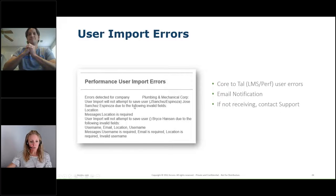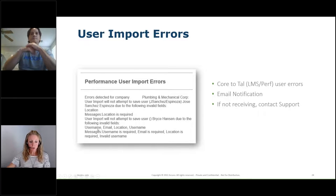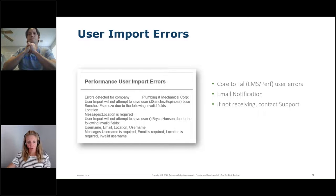If you are not currently receiving the error log email, make sure you let support or your account manager know. The email will tell you the user and why they errored. For example, if Jose didn't upload because of his location, that means the location field passed from CORE doesn't match a location field in the LMS and performance side — so you just need to create that matching location. Username can be tricky too: if a username is missing, that will throw an error. The email tells you exactly what field it's looking for, so you go into CORE, make the fixes, and next time it passes over it should correct.